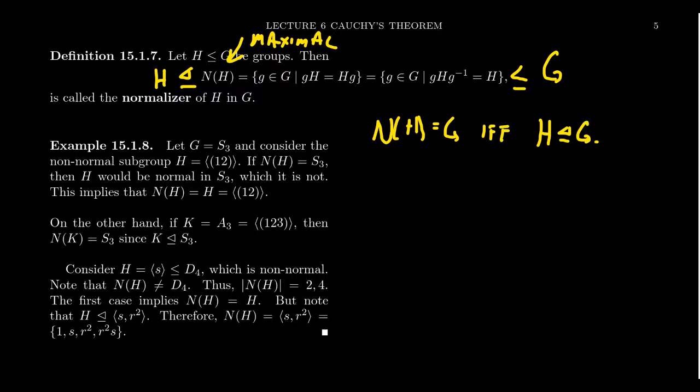I also want you to be aware that the elements in the normalizer, those are elements of the group which commute with the set H. So they commute with the set H like this, but they don't necessarily commute with elements of H. So one should be very cautious about that. This commutation is only at the set level. It's not on the element level. The set G times H is equal to H times G. Not elements though. Individually, things could be a little bit more shuffled around there.